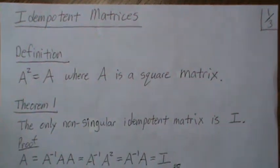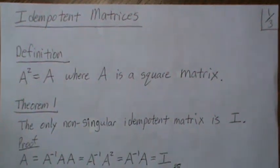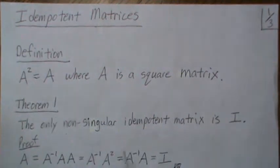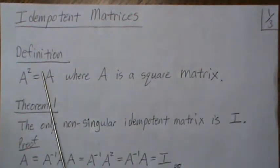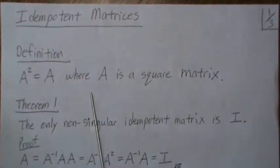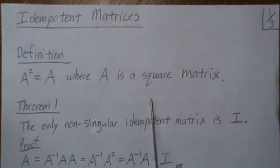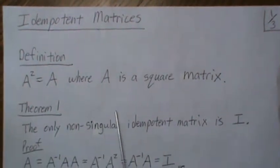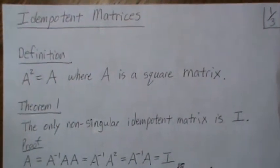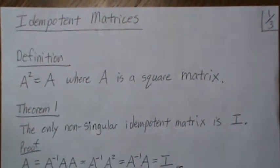In this video, we're going to look at idempotent matrices and properties of idempotent matrices. The basic definition is A squared is equal to A, where A is a square matrix. And if this property holds, then A is idempotent.